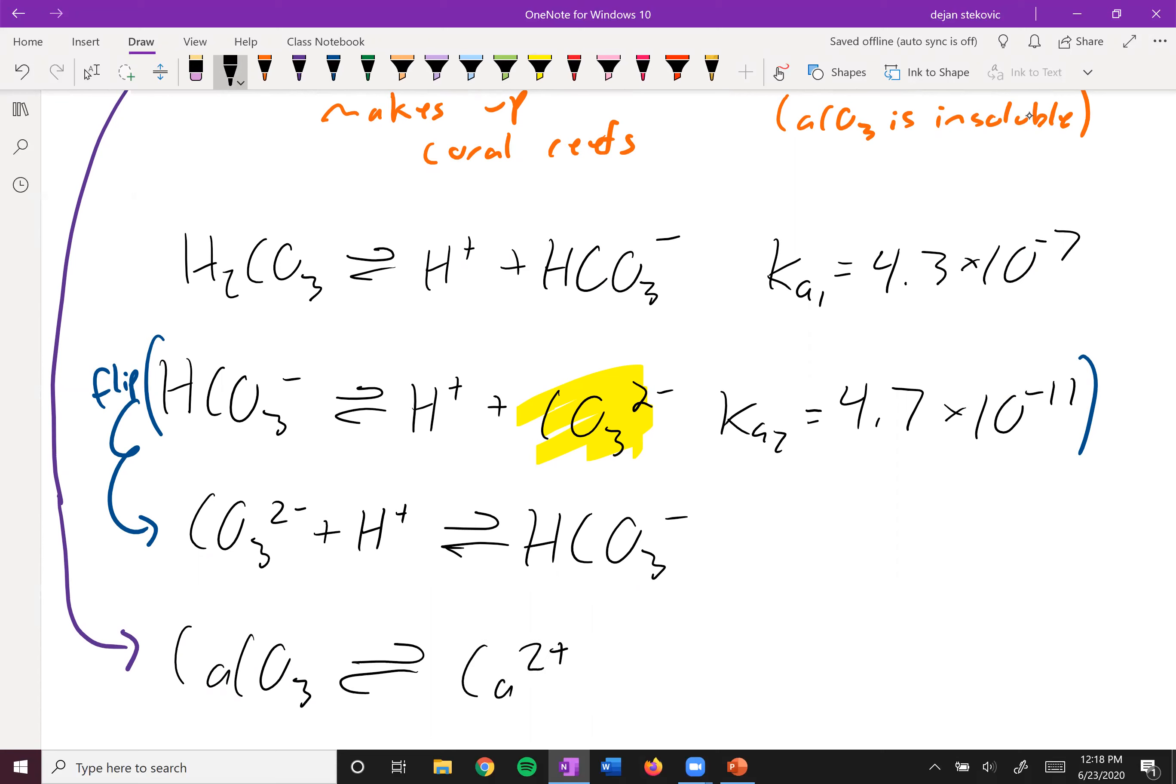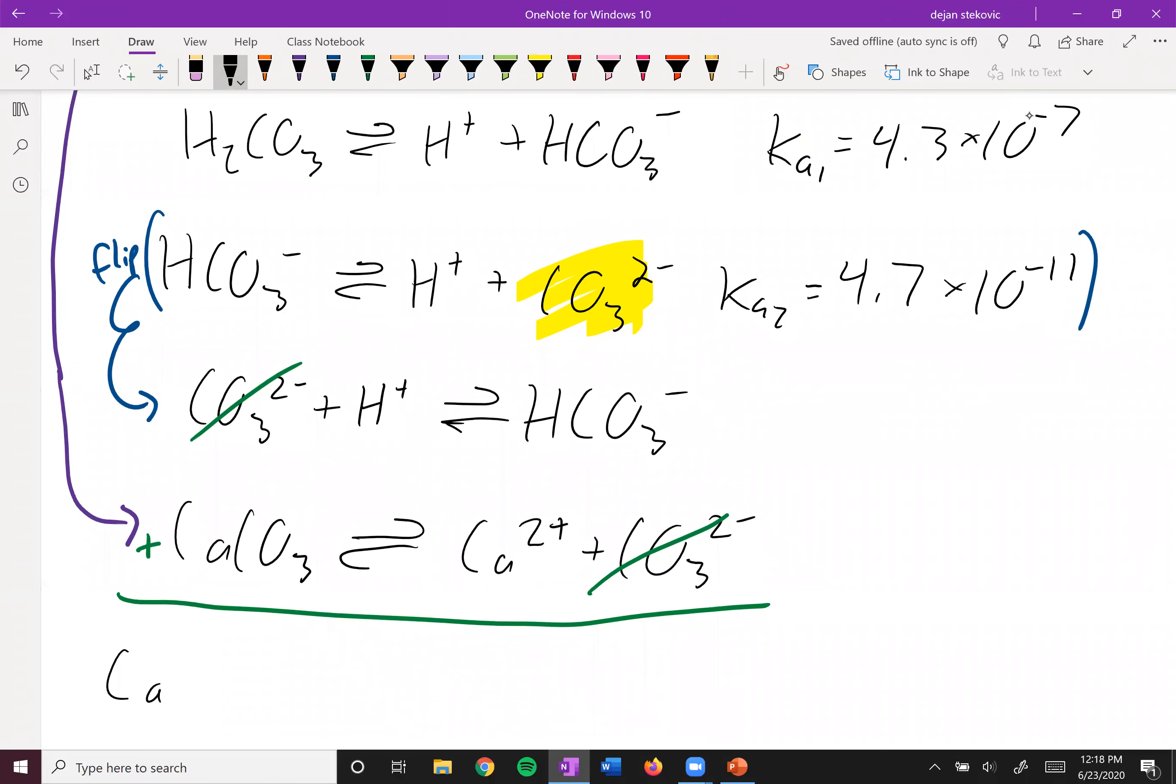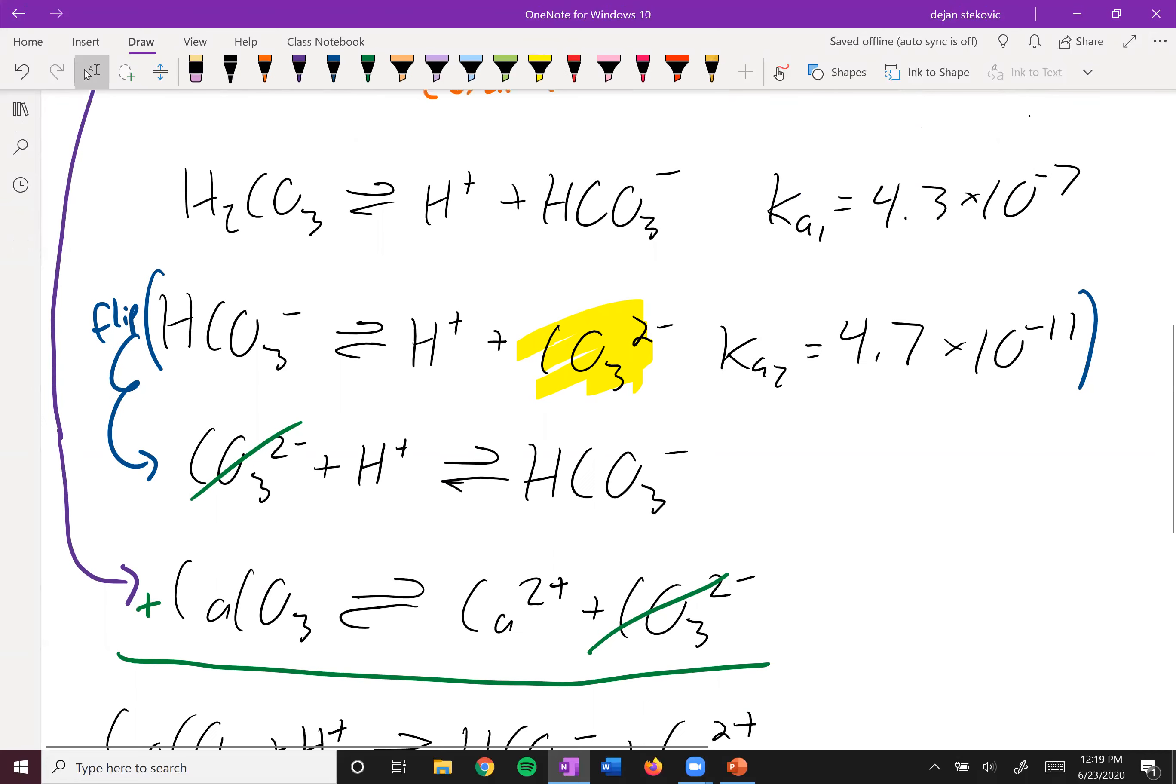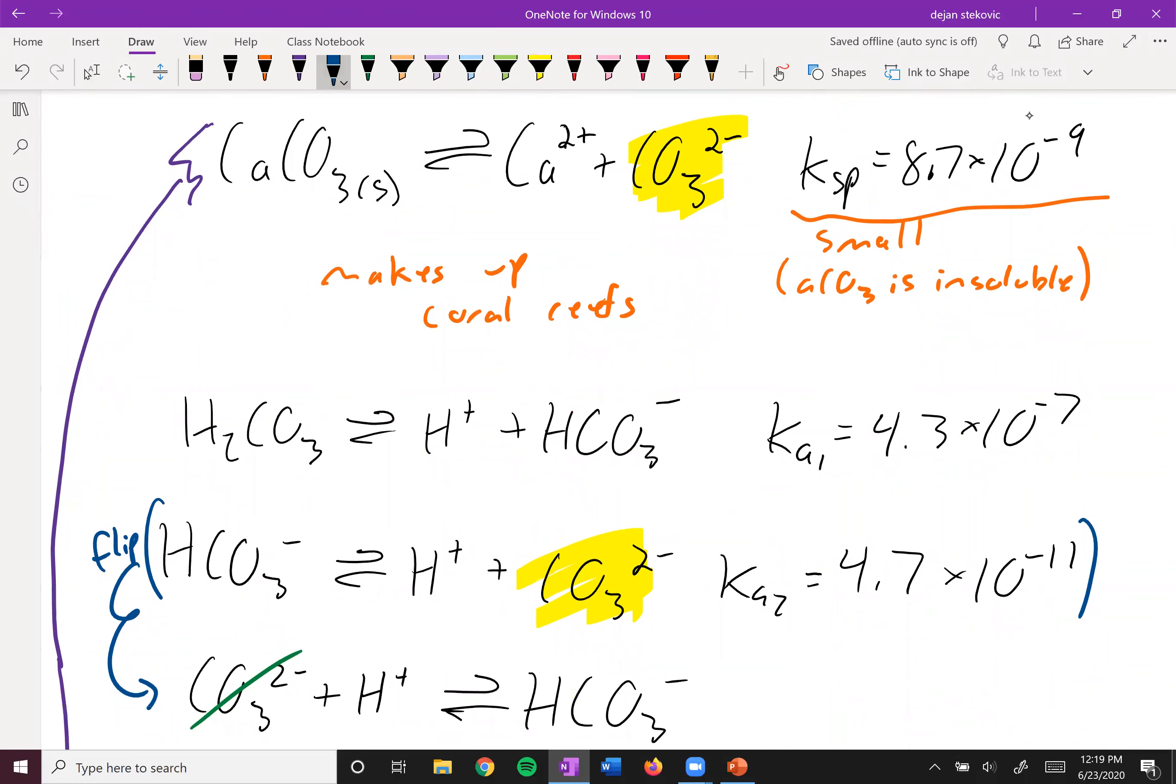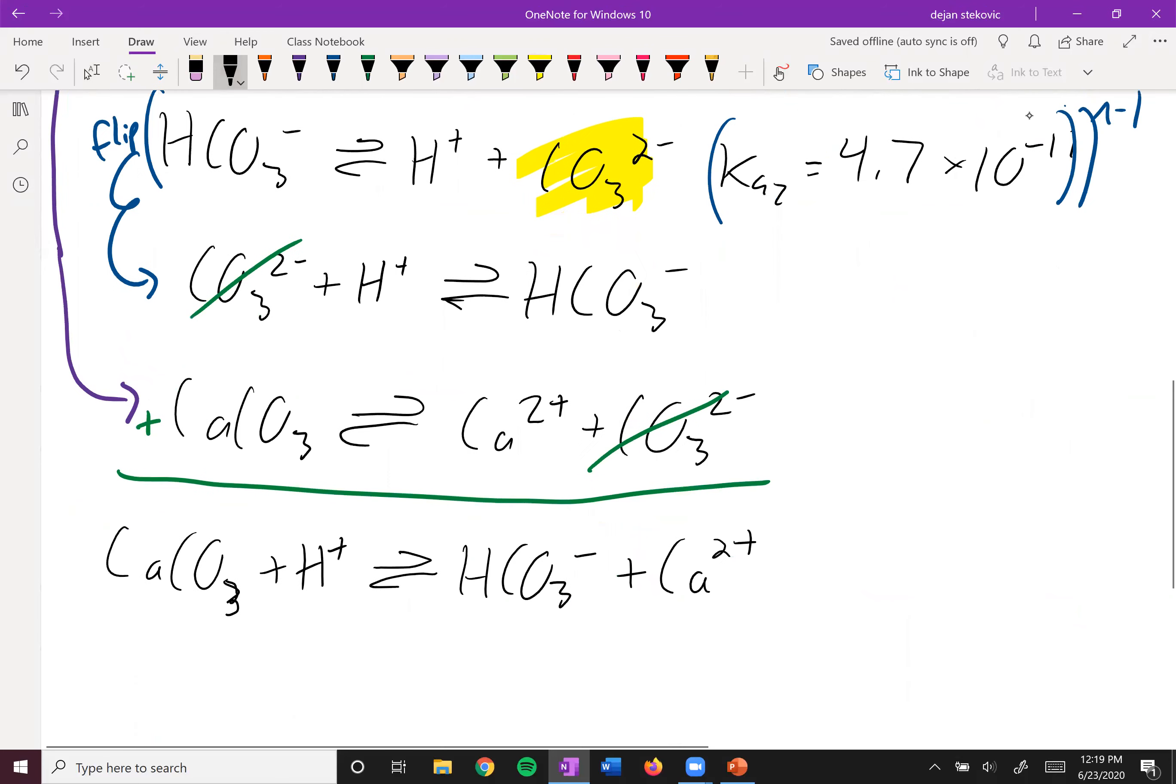So this is the calcium carbonate dissociating into calcium plus carbonate. We see when we add these two equations up, the carbonate will cancel out with one another. The equation overall is CaCO3 plus H⁺ goes to HCO₃⁻ plus Ca²⁺. And then we can multiply the k's, and since we flipped this k, we want to take the inverse of this one and then multiply it by our k up here. So our overall k here will be equal to the ksp divided by the ka2, and if you do the math you get a value of 180.